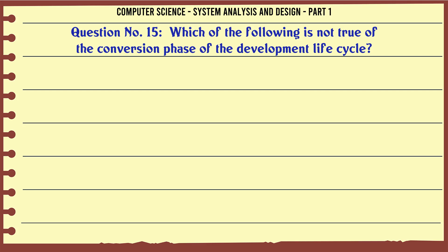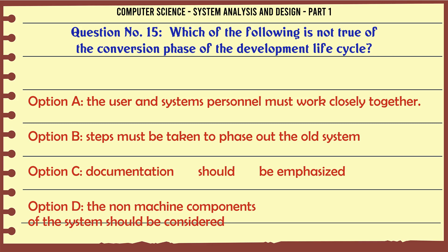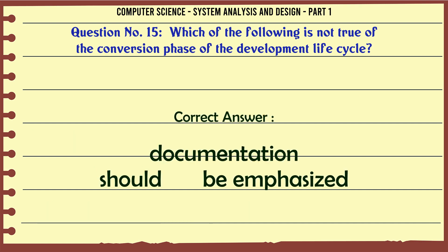Which of the following is not true of the conversion phase of the development life cycle? A. User and systems personnel must work closely together. B. Steps must be taken to phase out the old system. C. Documentation should be emphasized. D. The non-machine components of the system should be considered. The correct answer is: Documentation should be emphasized.